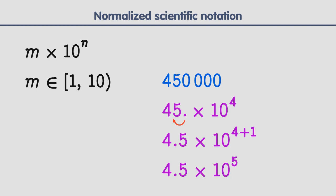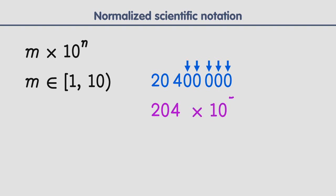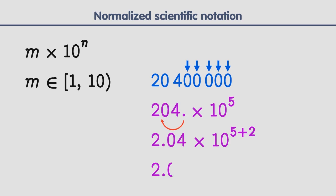Let's look at another example. This number has 5 trailing zeros, so we remove them and we get 204 times 10 to the 5th power. But 204 is greater than 10, so we have to shift its decimal point 2 places to the left to get 2.04. Since we shifted the decimal point 2 places to the left, we increase by 2 the exponent of 10. And this is the result.